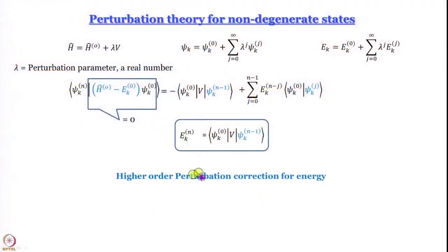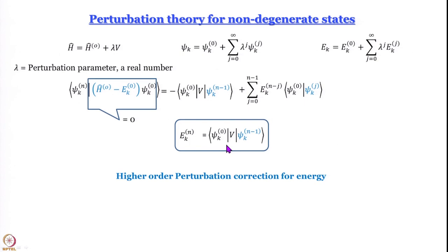We have obtained an expression for the higher order perturbation correction for energy, and in this expression we have the integral ⟨ψ_k^0|v|ψ_k^{n-1}⟩. Let us not bother about v for the moment — v is going to be dependent on what kind of system we look at. For a harmonic oscillator v will have one form, for a rigid rotor it will be something else. Depending on the system we will get different kinds of v; for multi-electron atoms it will be electron-electron repulsion and so on.